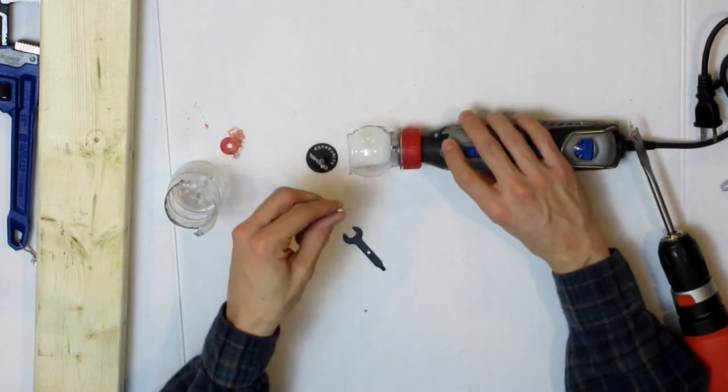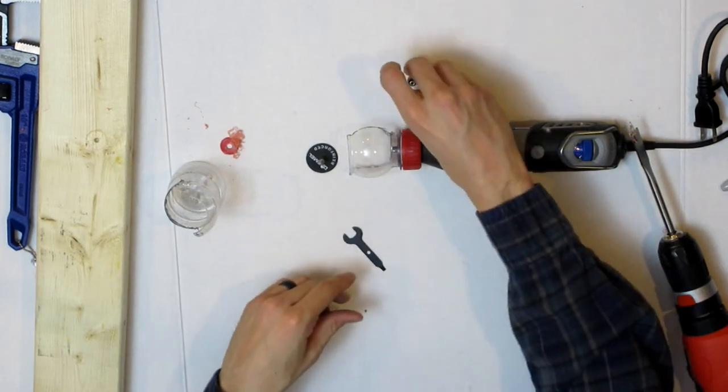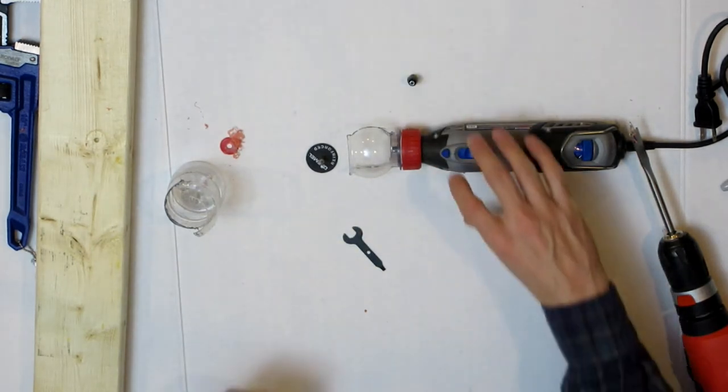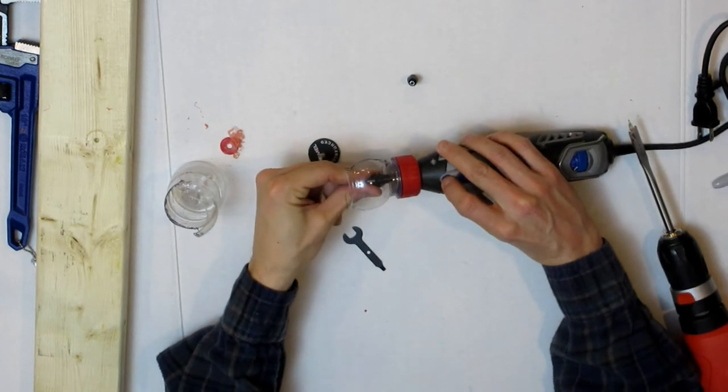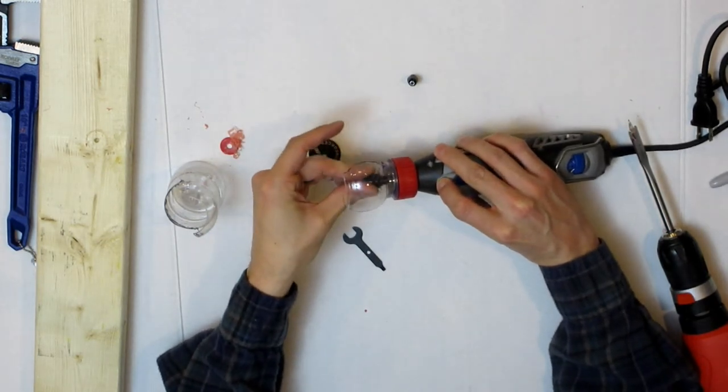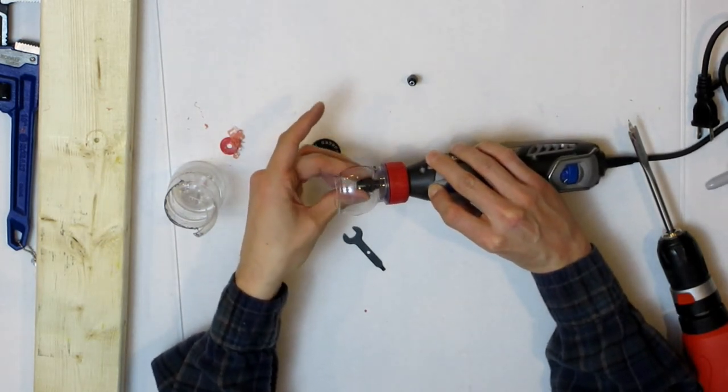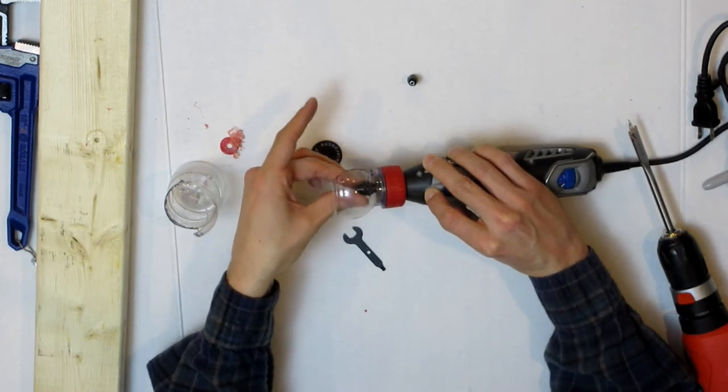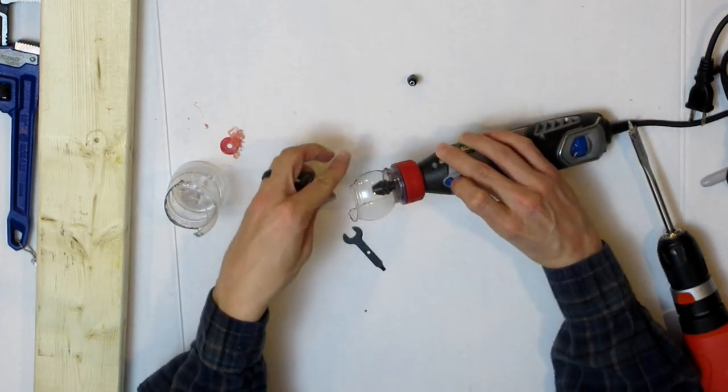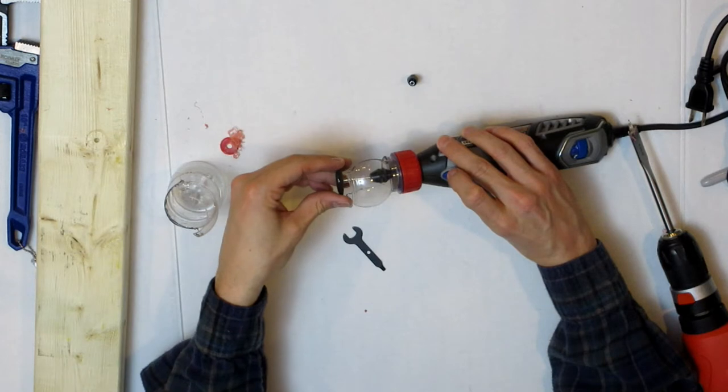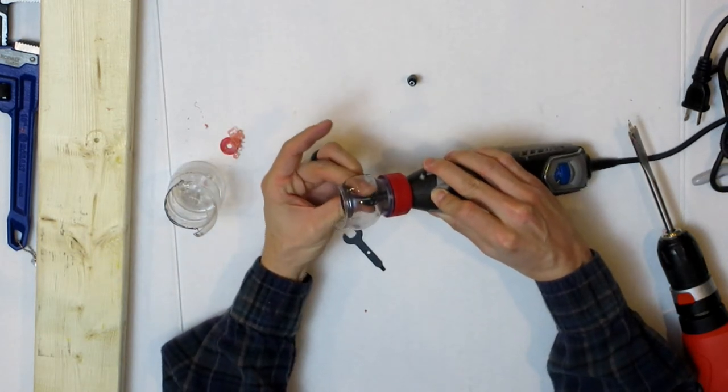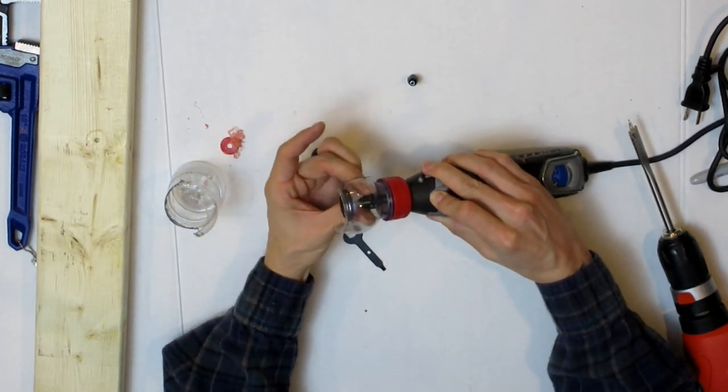And once you have this guard in place, as you notice you cannot get the wrench down onto the collet. So if you do not have a keyless chuck that I'm cinching down onto the Dremel, I would recommend getting a hold of one of those. It's a dollar-ish I think.